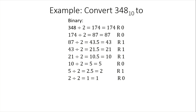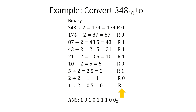The quotient here is not yet 0, so we will not stop. 1 divided by 2 is 0.5, or 0 remainder 1. The quotient is now 0, so we will stop. Therefore, the binary number for 348 is the remainders from the bottom to the top. The answer is 101011100 base 2.